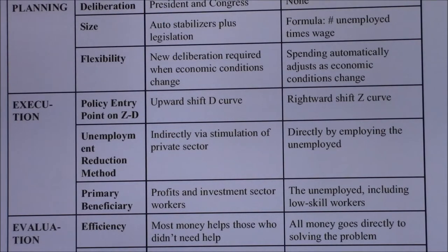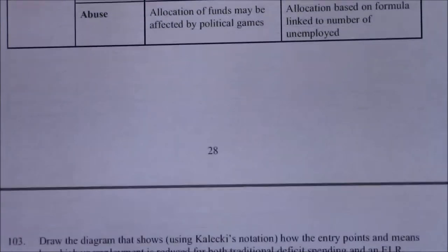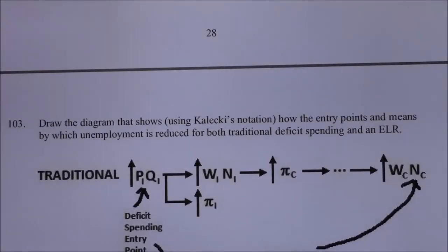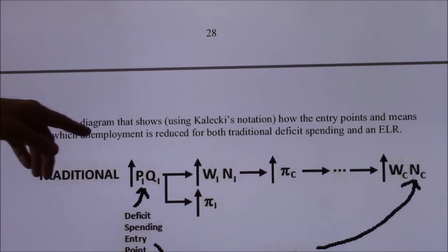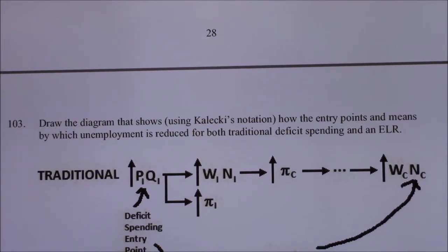The next study question says: draw the diagram that shows, using Kalecki's notation, the means by which unemployment is reduced for both the traditional deficit spending and an employer of last resort.